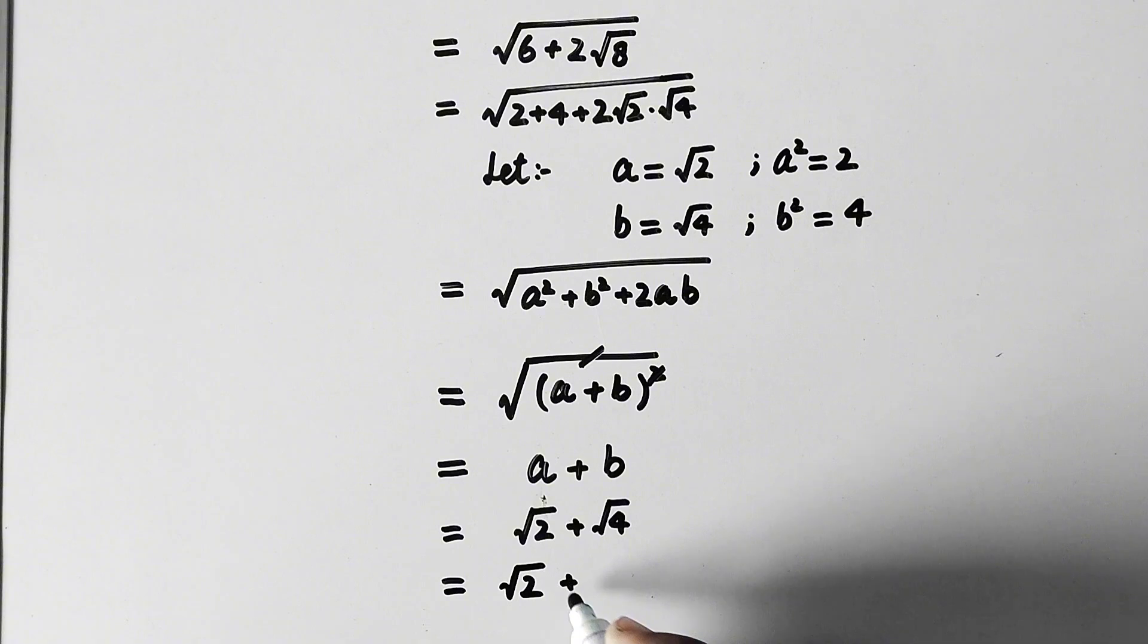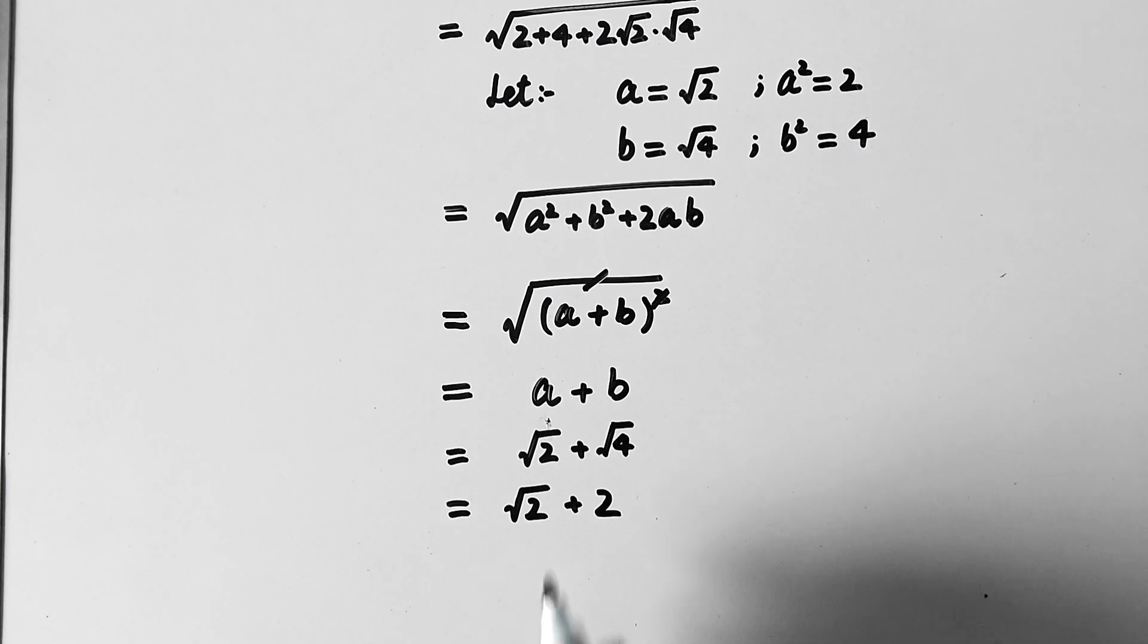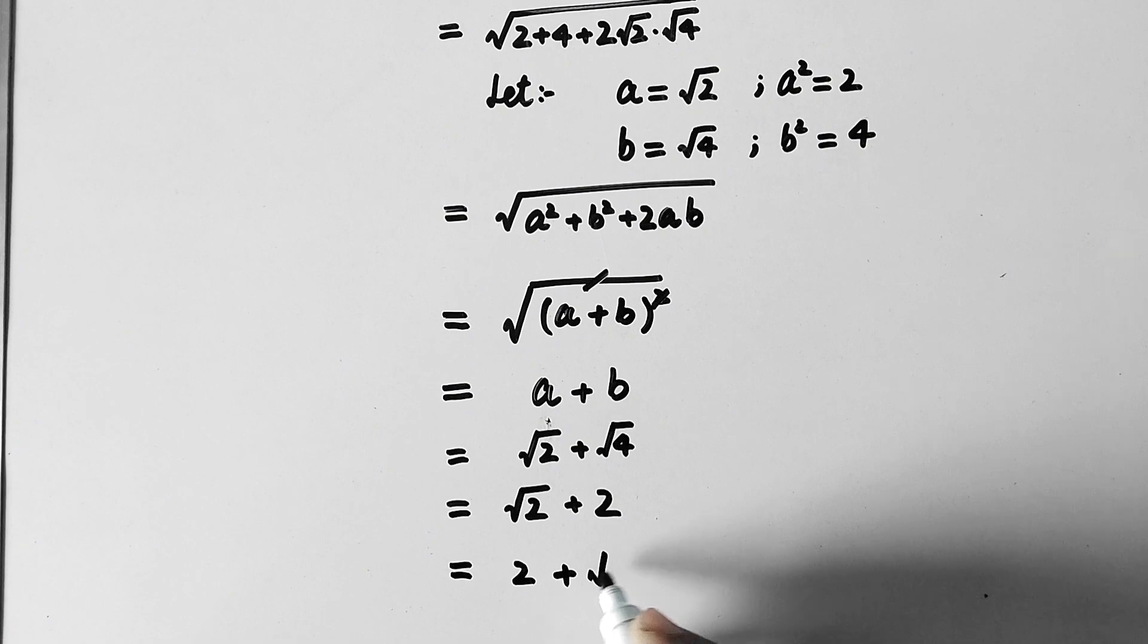So here √4, or we can write √2 + √4 = 2, and we can write it in this way: 2 + √2.